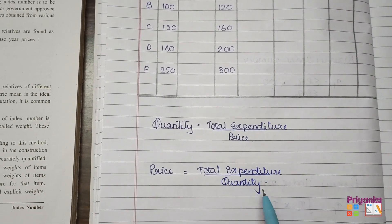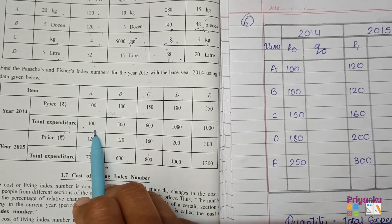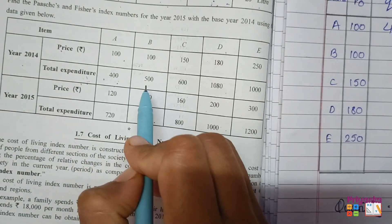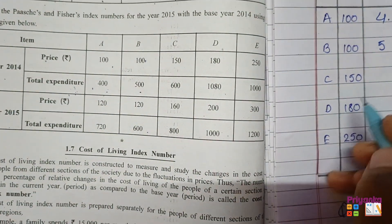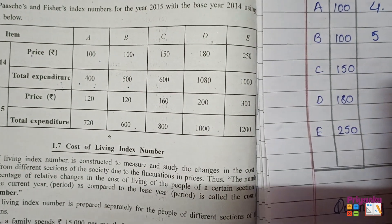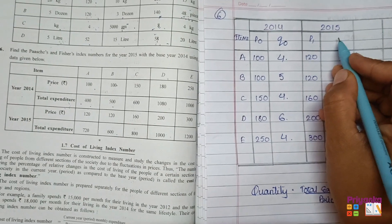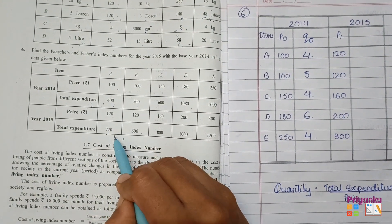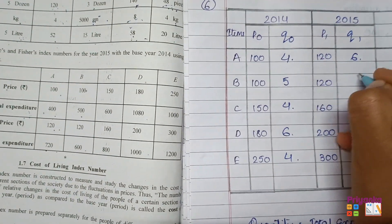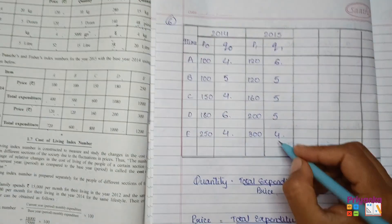Whenever total expenditure is given, convert it to quantity since total expenditure is not needed in the formula. Total expenditure divided by price gives quantity. For base year 2014: 400 ÷ 100 = 4, 500 ÷ 100 = 5, 600 ÷ 150 = 4, and so on. For current year 2015, divide total expenditure by the current price to get q1: giving values 6, 5, 5, 5, and 4.